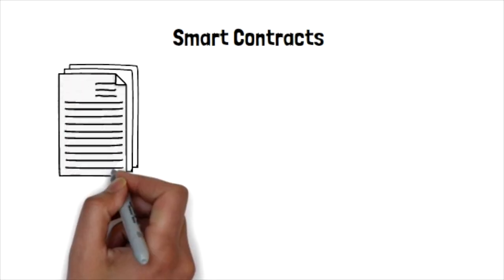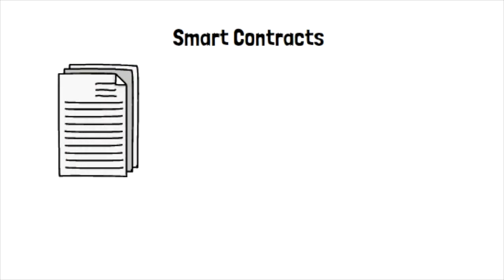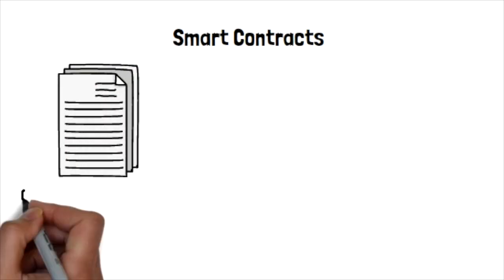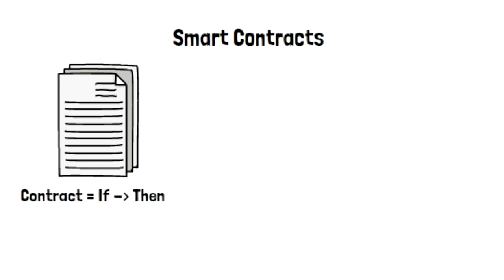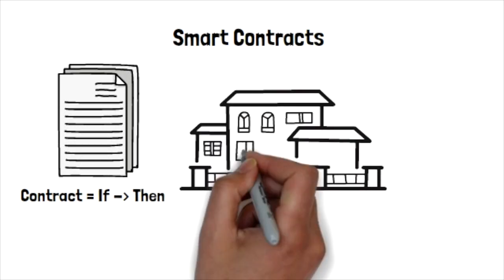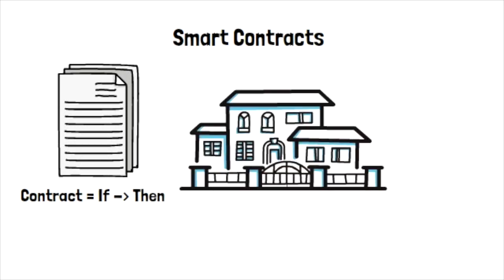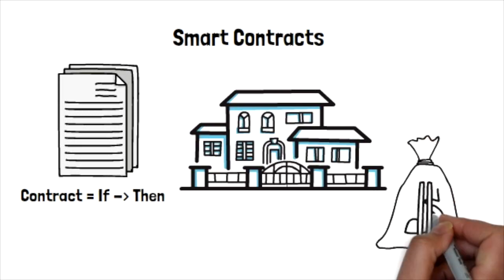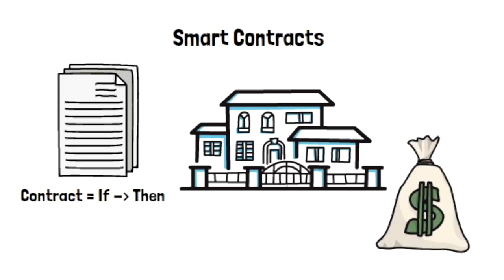Every dApp runs on a smart contract. Contracts can be thought of as simply if-then statements. For instance, if I pay a certain amount of money, then I gain ownership to a house. Or, if I work a certain amount of hours, then I am entitled to be compensated for a certain amount of money. Smart contracts take care of the outcomes of contracts automatically.